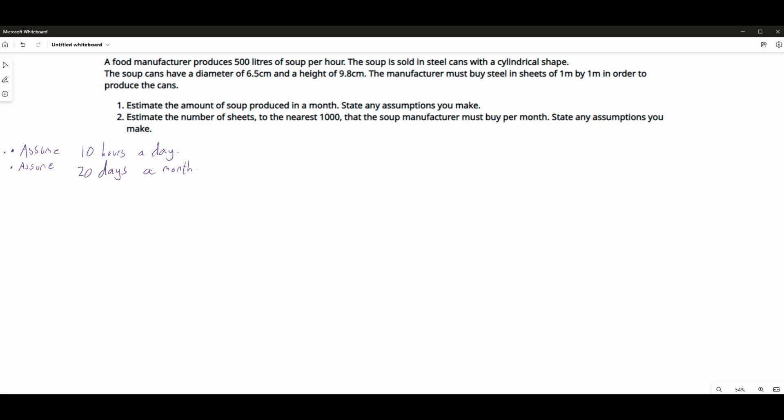So the amount of soup per month is going to be 500 litres per hour multiplied by 10 hours a day multiplied by 20 days a month. Which is going to be 100,000 litres per month. That's fine. That's part one answered.